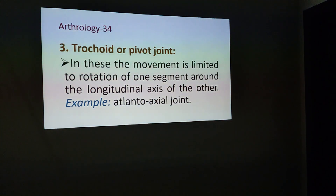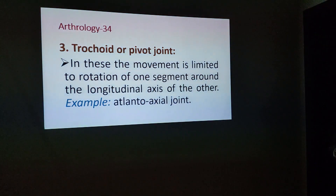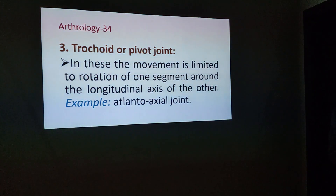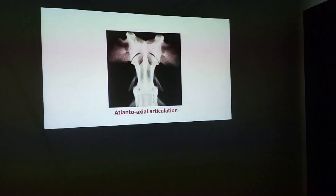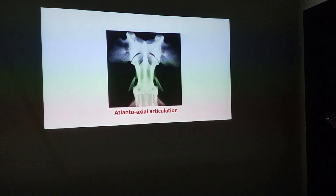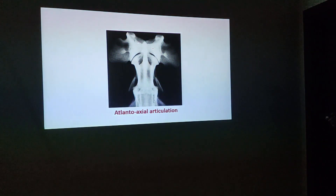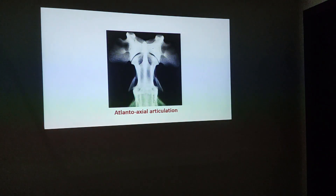Then there are trochoid joints, or pivot joints. In these joints, movement is limited to rotation of one segment around the longitudinal axis of the other. The best example is the atlanto-axial joint. As you can see here, this is the atlas and this is the axis forming the atlanto-axial joint, which is the example of this type of movement.